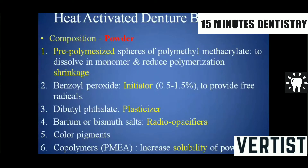The powder also contains benzoyl peroxide as an initiator to provide free radicals, dibutyl phthalate as a plasticizer, barium and bismuth salts as radio-opacifiers, color pigments to provide the pink to slightly reddish shades of the denture base, and various co-polymers that increase solubility of the powder with the monomer and reduce forming time and brittleness.